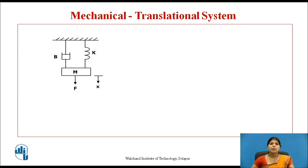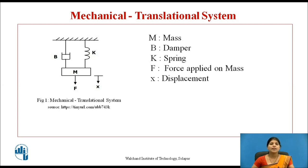Consider a simple mechanical system as shown in figure 1. The mechanical translation system has three elements: spring, mass, and friction. M is the mass, B is the friction or damper, and the spring constant is denoted as K. Due to the applied force, mass M will displace by an amount X in the direction of force F as shown in the figure.